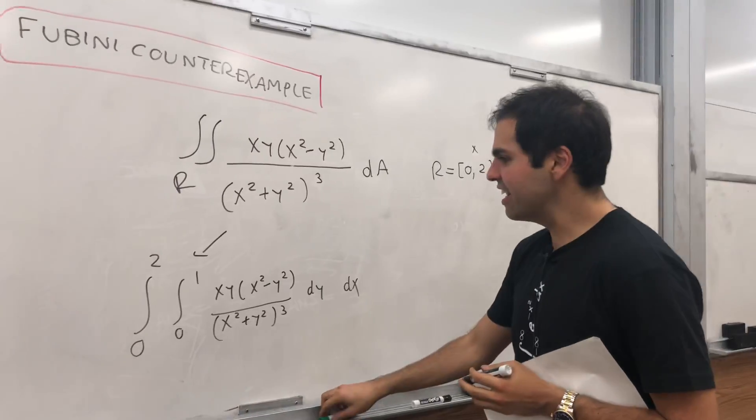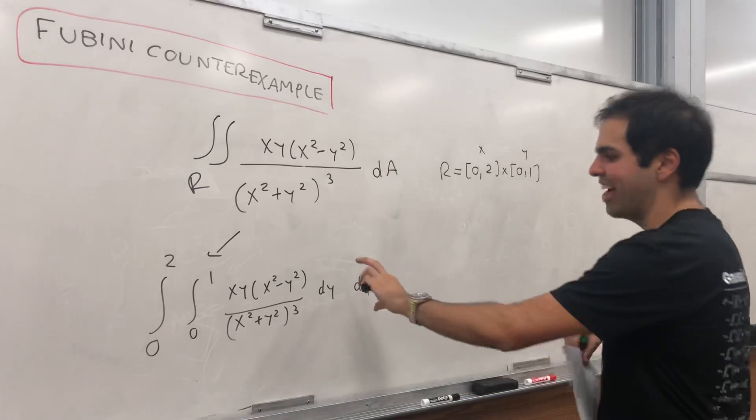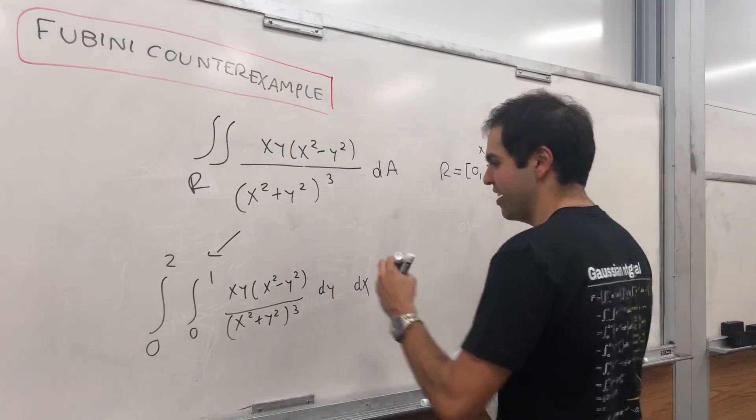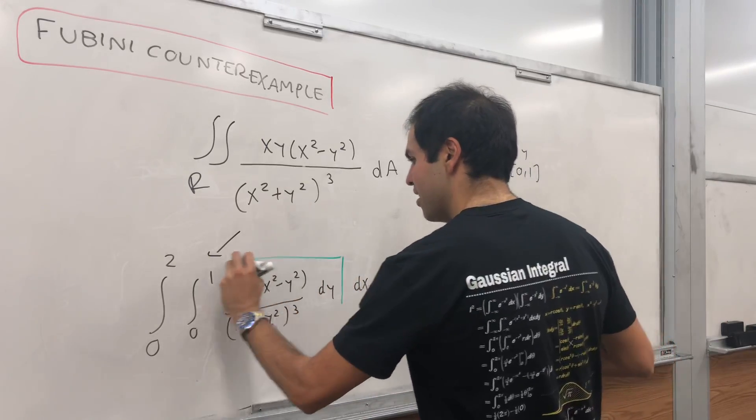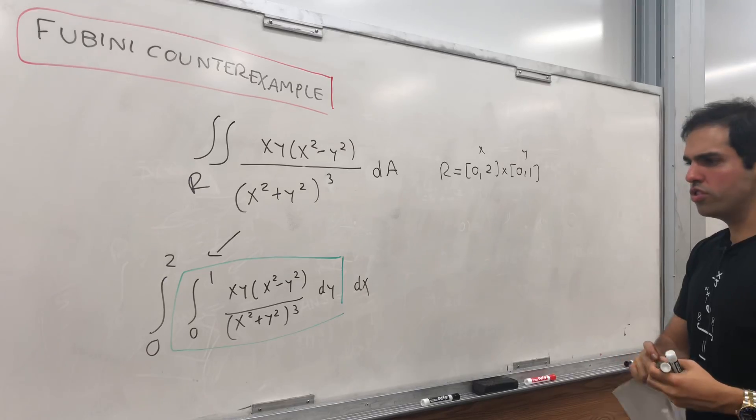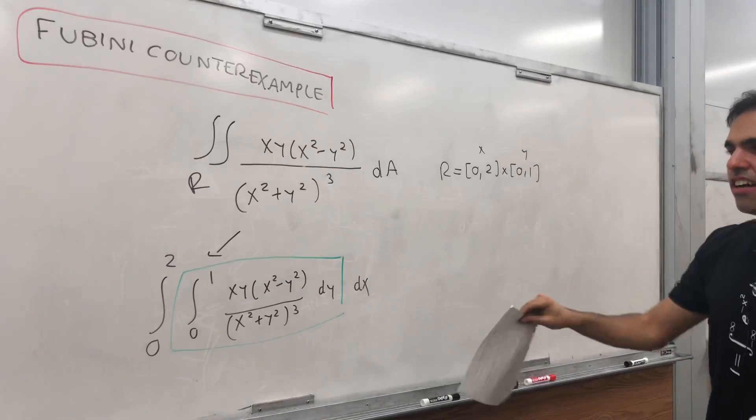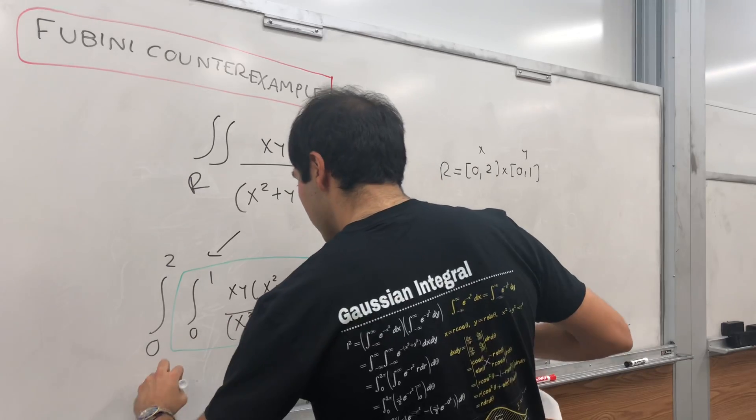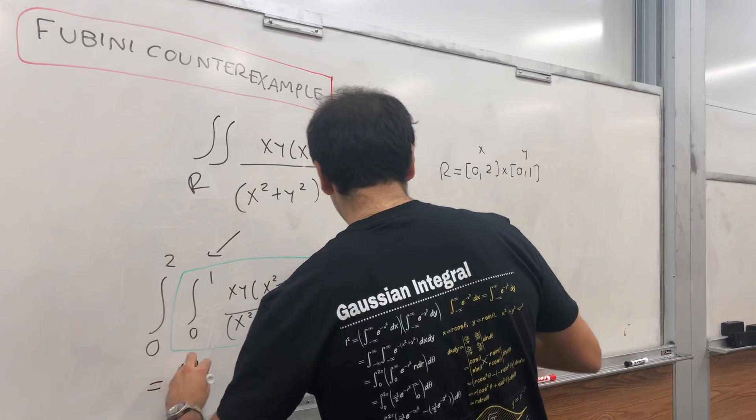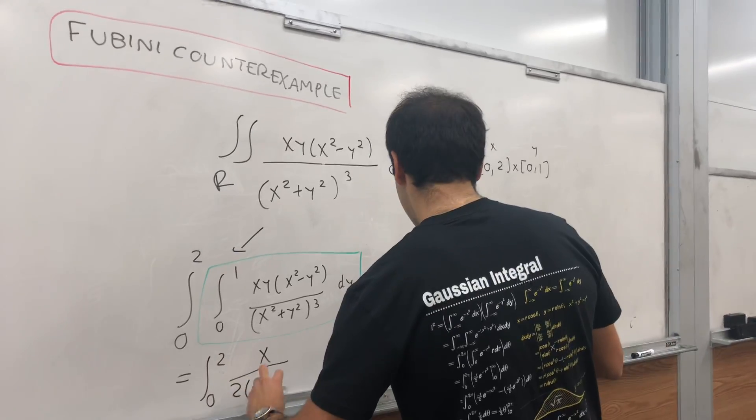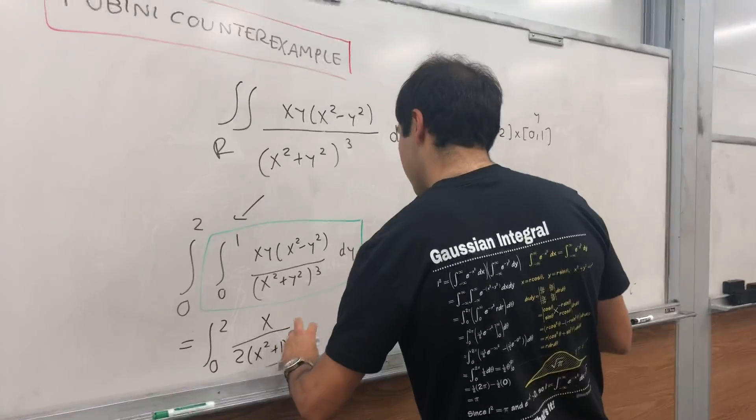So this is like calculating the slice with respect to y first, and then integrating with respect to x. Now it turns out, using a simple u substitution, you can calculate that integral, and you get that this is equal to the integral from 0 to 2 of x over (2x squared plus 1) squared dx.